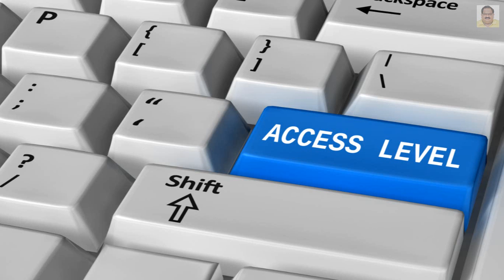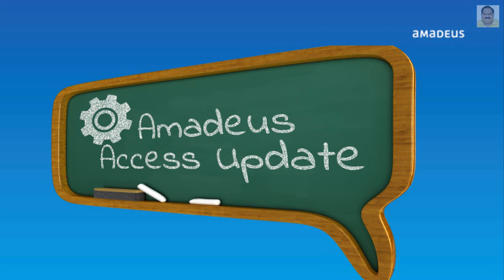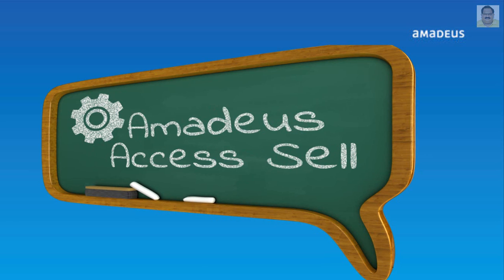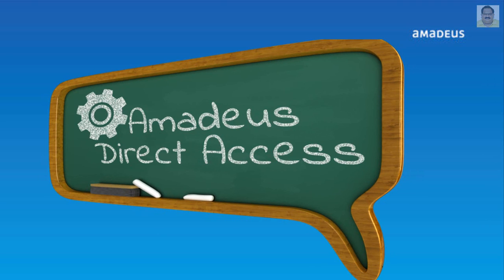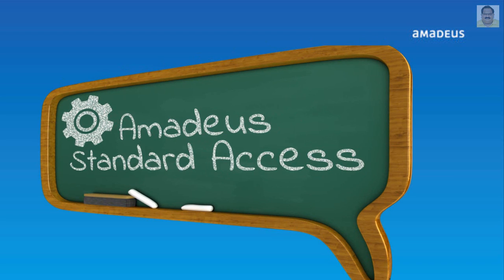Airlines can have access levels with Amadeus: Amadeus Access Update represented by a colon symbol; Amadeus Access Cell represented by a dot or full stop symbol; Amadeus Full Access represented by a slash symbol; Direct Access represented by an asterisk symbol; and Standard Access represented as blank, without any symbol.